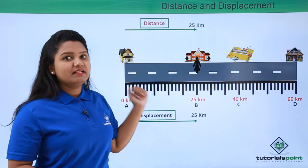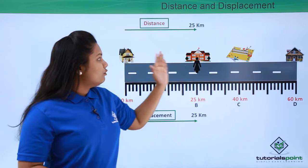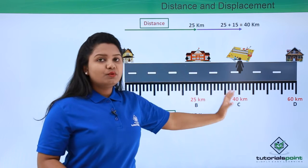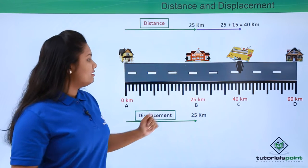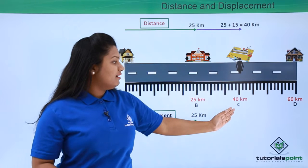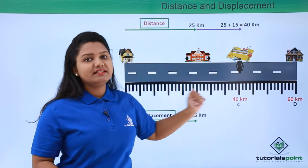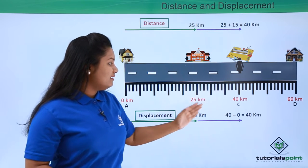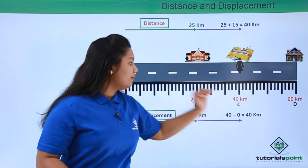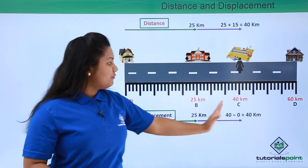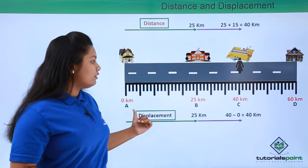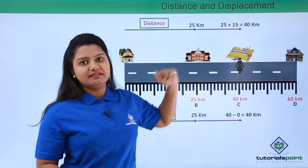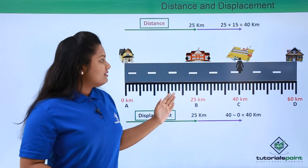Now suppose I move from the school to the tennis court. The total distance covered becomes 40 kilometers, since I am now at position C. The displacement is again final minus initial, which is 40 minus 0, equals 40 kilometers — the same as distance.